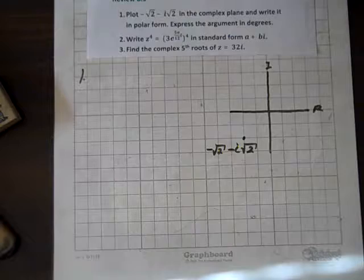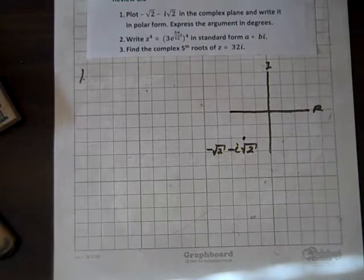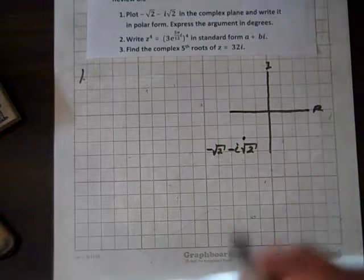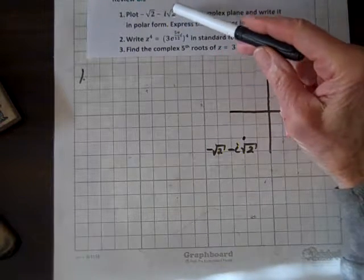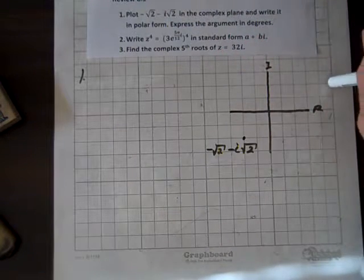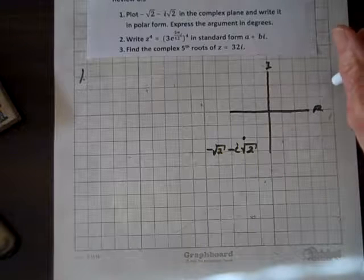Okay, now we're doing the review for 8.3, and the first task is to plot the point negative root 2, negative i root 2 on the complex plane, and write it in polar form.